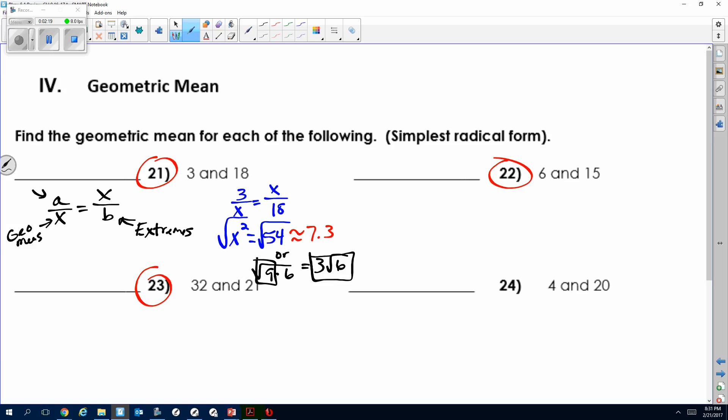So that comes out to be 3 square root of 6. So here are our possible answers right here. So we could have 3 square root of 6, which is the simplest radical form.